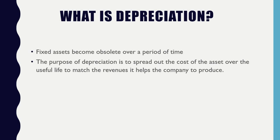Once you return a product back to the store, they can't sell it for the same price because it's been used — it has wear and tear. It might be refurbished and sold at a lower price. Same with furniture: if you use it and put it back on the market, people won't pay the original price because fixed assets lose value over time due to wear and tear.